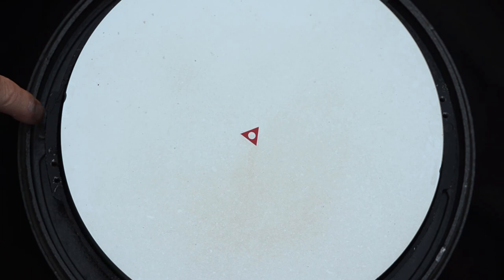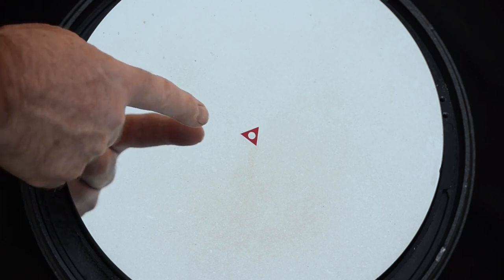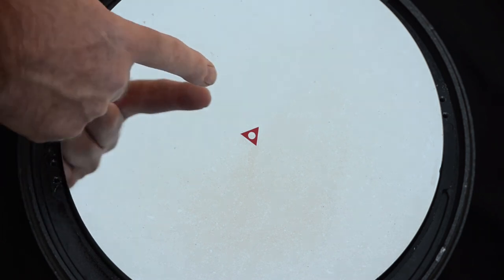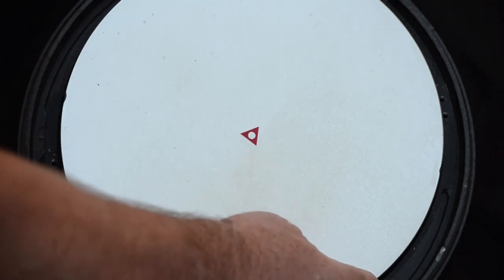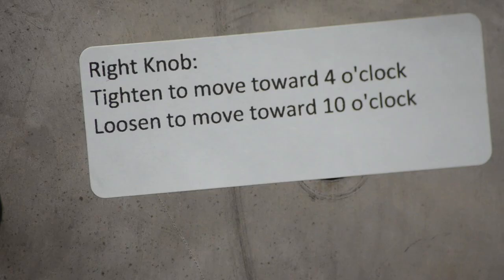Here's a final helpful hint. If you line the primary mirror in the mirror cell so that the triangle points orient with the collimation screws, it will be easier to figure out which collimation screw to turn and in what direction to turn it. You can even make a label like tighten to move towards 4 o'clock, or something like that. This is unnecessary, but it can make things easier for some people.